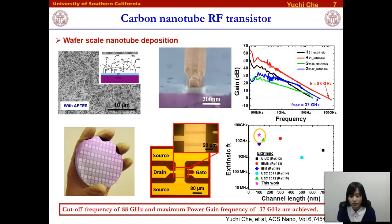We applied this device platform to carbon nanotube material and fabricated RF transistors. We have achieved a current gain cutoff frequency of up to 100 GHz using this device structure. Comparing our results with other reported carbon nanotube RF transistors, our performance is one of the best reported to date, and it is also good enough for most current RF circuits and systems.